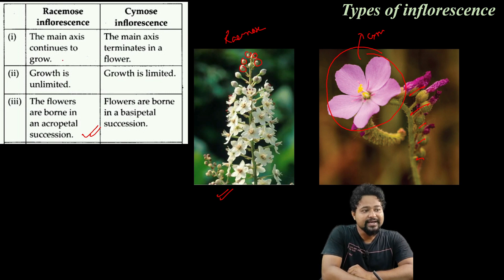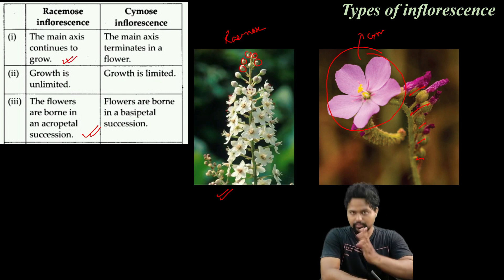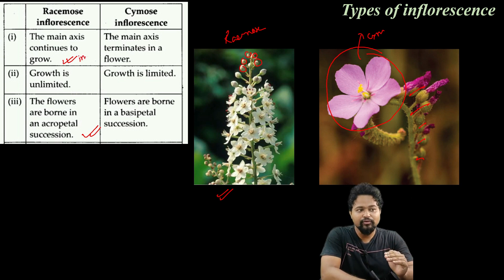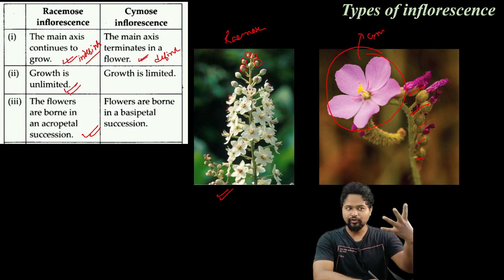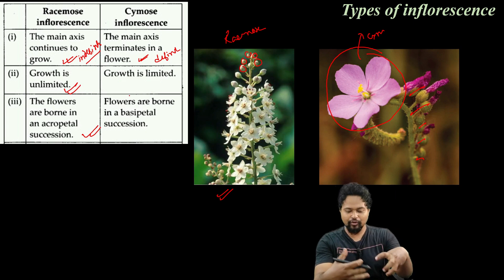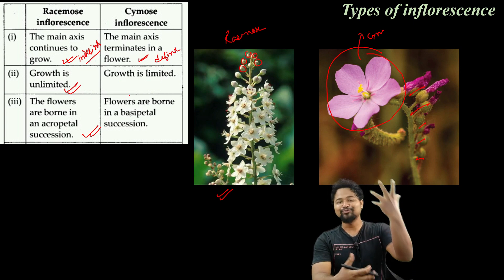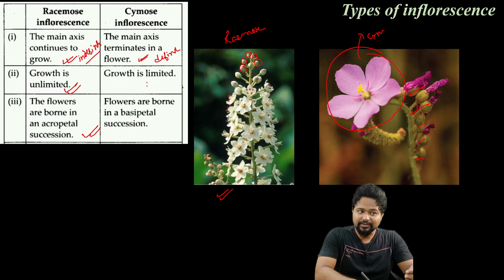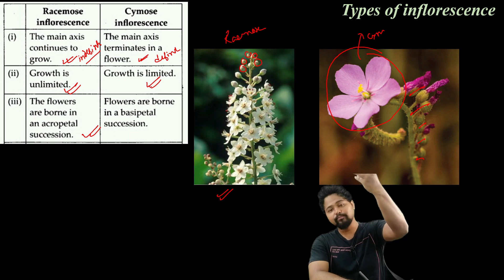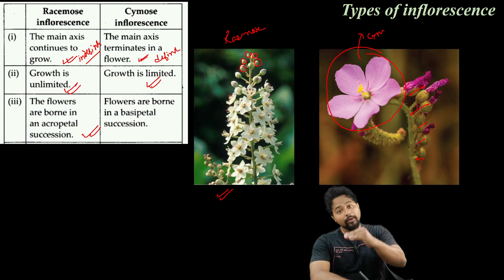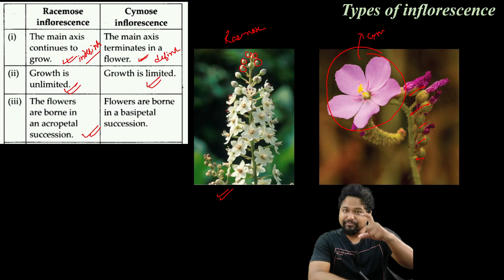In racimose, the main axis continues to grow. In cymose, the main axis terminates in a flower, so this is definite growth — growth is limited. In racimose it is indefinite growth — growth is unlimited.